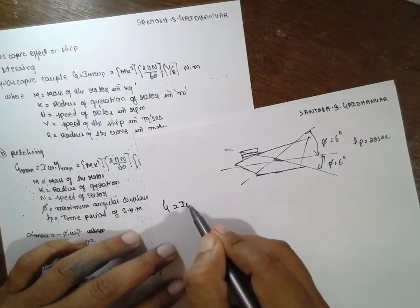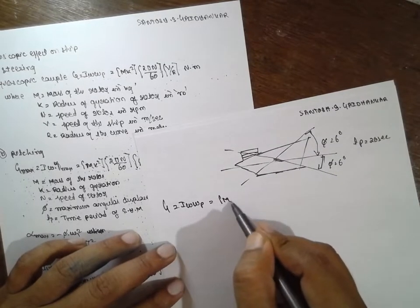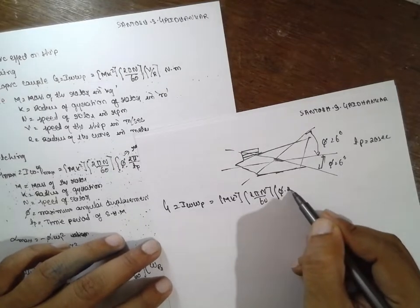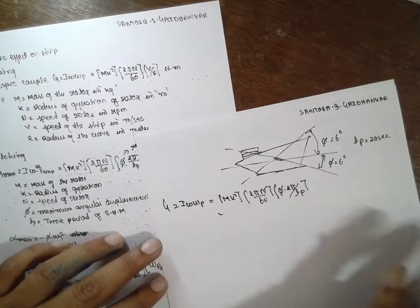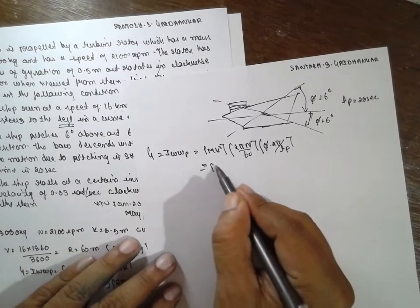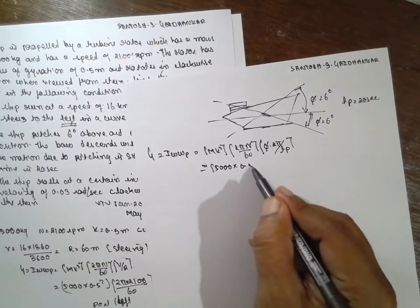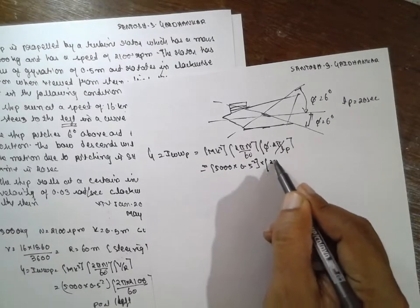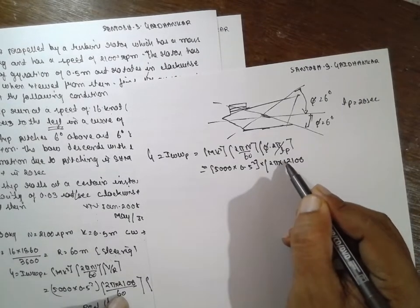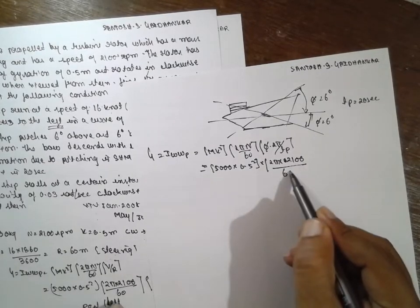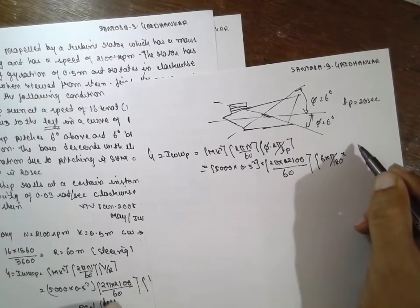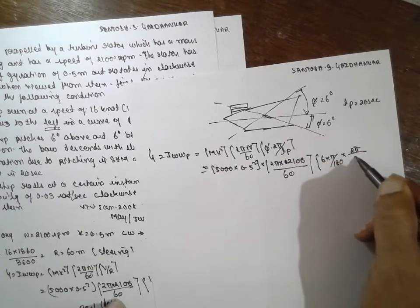G is equal to I omega omega_P, M K square, 2 pi n divide by 60, into phi 2 pi T_P. What is M? M is nothing but 5000 into 0.5 square, 2 pi into 2100 divide by 60. What is phi? Phi 6 into pi by 180, 2 pi by 22.